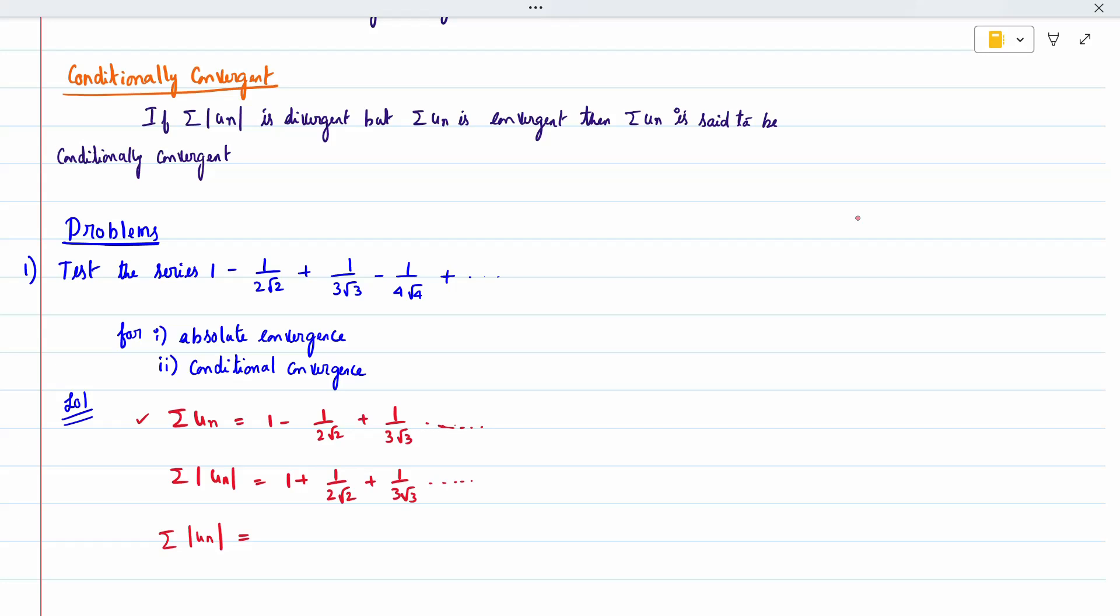Writing the general case for these positive terms, we get the sum of 1/(n√n), which can be rewritten as sum of 1/n^(3/2). This form is the p-series that we have studied in the series topic.